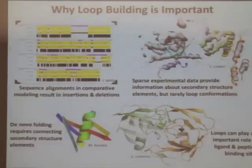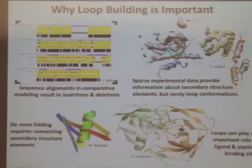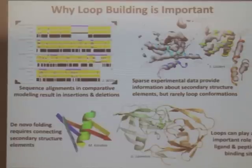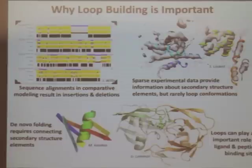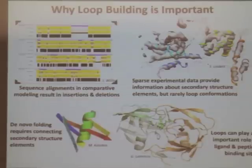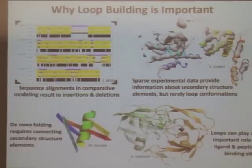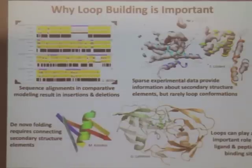I'm going to switch to loop building unless anybody has any questions about comparative modeling. In a comparative modeling run, can you also incorporate experimental data like NMR data into the program? Yes, you can use experimental restraints. I specify disulfide bonds that I know form when I do comparative modeling. You can also use constraint files, just like Stephanie talked about for hers.